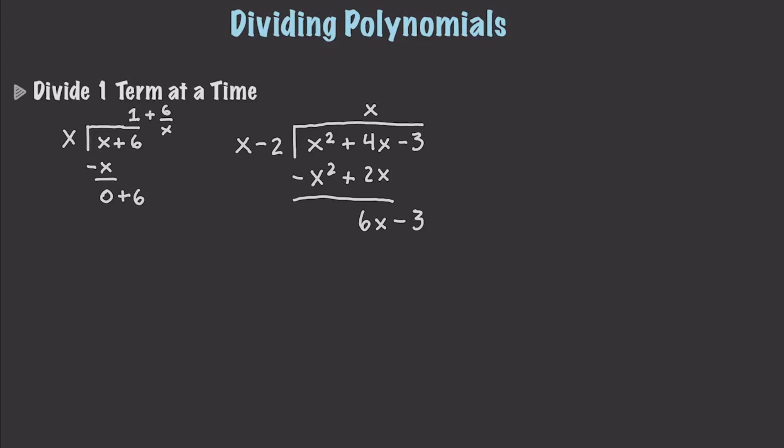We're going to add 6 to this. And then 6x is going to be negative 6x plus 12. And when we work this out, that's going to give us a value of plus 9. We can't go any further, so we're going to have a remainder of plus 9 divided by x minus 2.